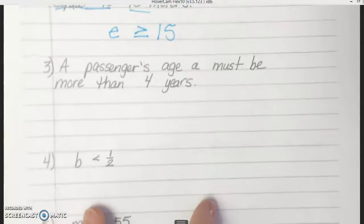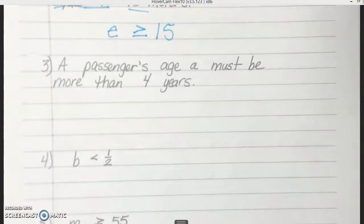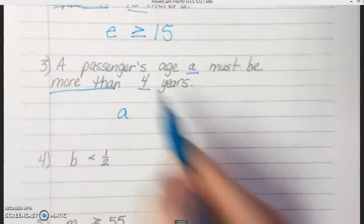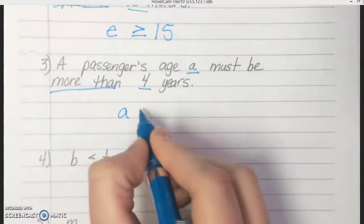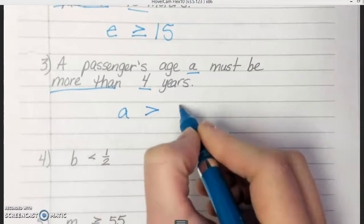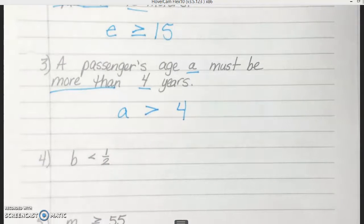Alright, let's look at number 3. A passenger's age, A, so we're using A for age, must be more than 4 years. So how would we write that? More than would be greater than 4. So in this case, what kind of number would we have to have here? The passenger's age must be more than 4 years. So the number would have to be any positive number greater than 4. Any questions on those?